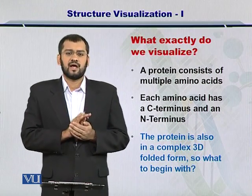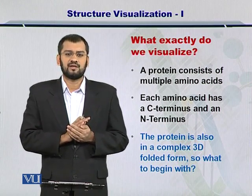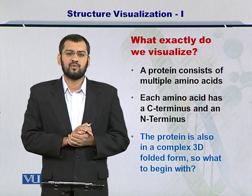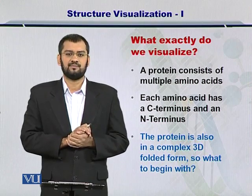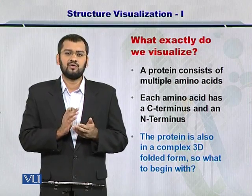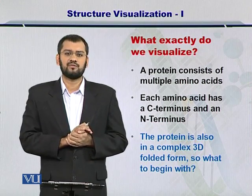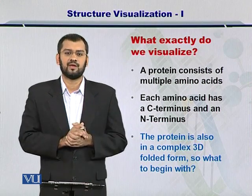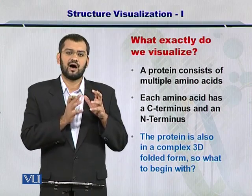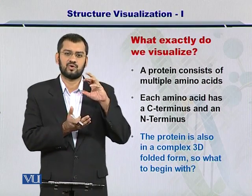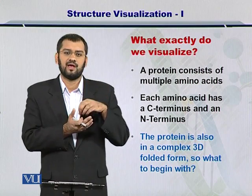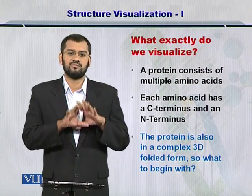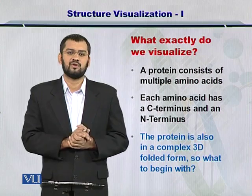Each alpha carbon, beta carbon, and nitrogen form the backbone of the entire protein. How do you start to solve the problem of visualizing a protein? We know that there are R side chains attached onto the alpha carbon, and that they also play a part in the conformation or the visualization of the protein.